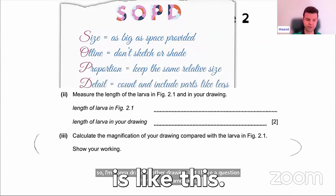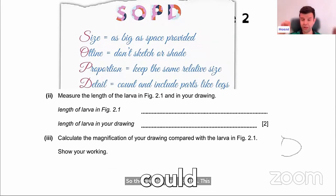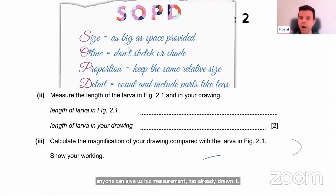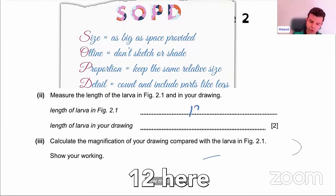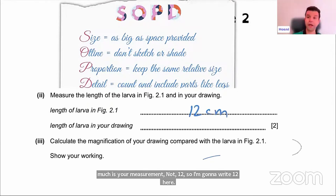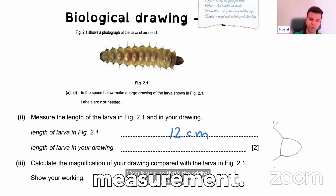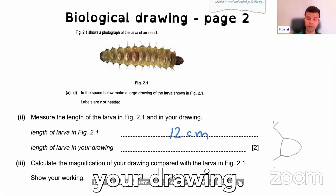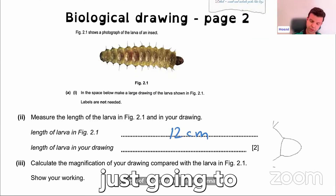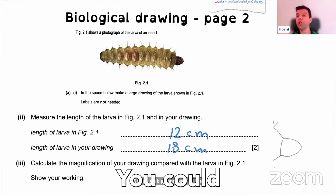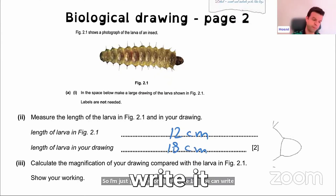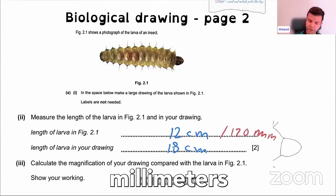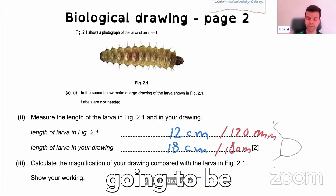I have the question here on the same page. Measure the length of your drawing. Could anyone measure their drawing and give a number? The original measurement is 12 centimeters. I'll assume your drawing is bigger — maybe 80. You could write your answer in any unit: centimeters or millimeters. So you could write it as 120 millimeters or 180 millimeters — either way is acceptable.